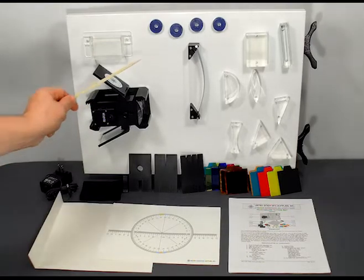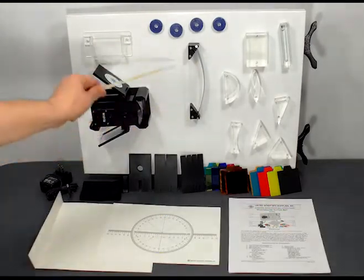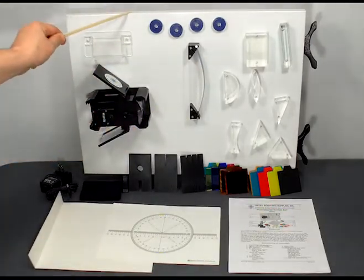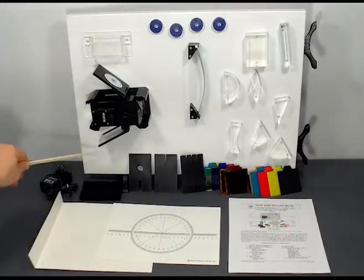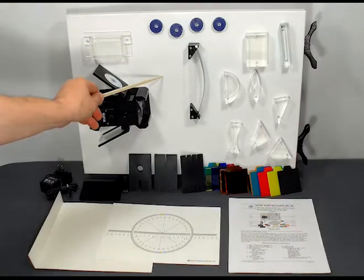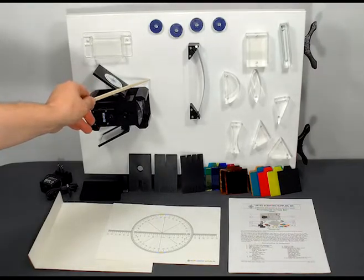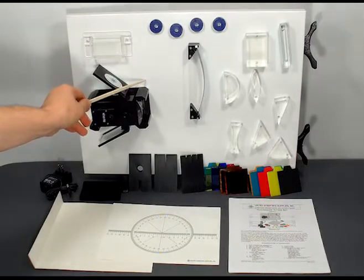The light source along with the optical components all have a magnetic back so they can stick to any metal surface. The kit is also available without the metal whiteboard in case you already have a metal backed whiteboard in your classroom.